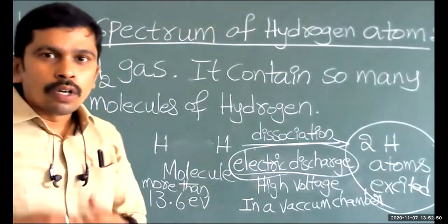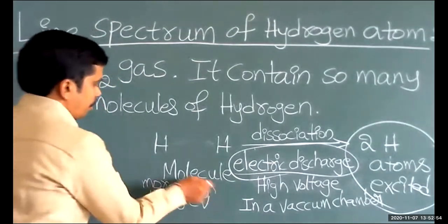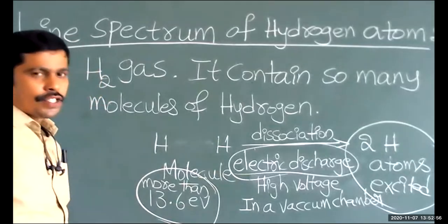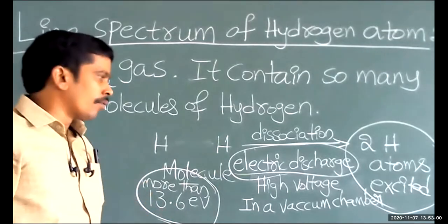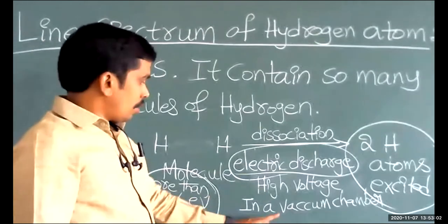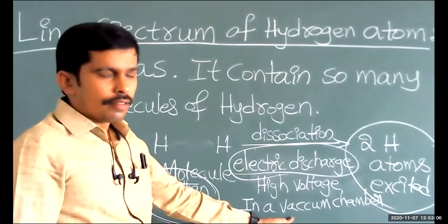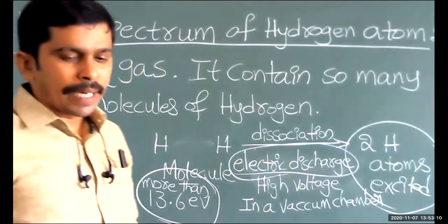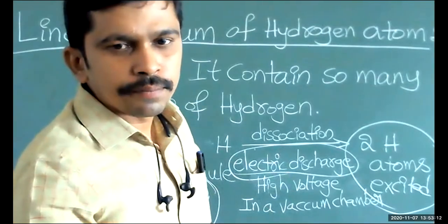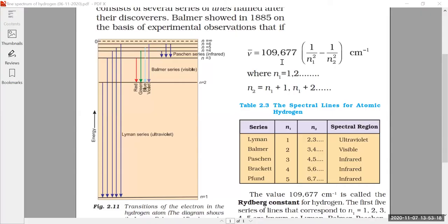To form the line spectrum of hydrogen atom, the conditions required are: in the electric discharge tube, the electricity must be more than 13.6 electron volts, and the electric discharge tube must be evacuated. Now we are going to see the hydrogen spectrum — line spectrum of hydrogen atom. On the screen, I am going to show you the formation of the line spectrum of hydrogen atom.